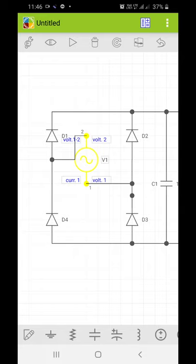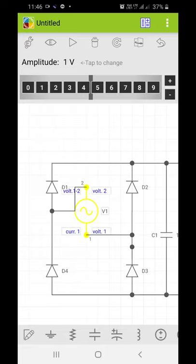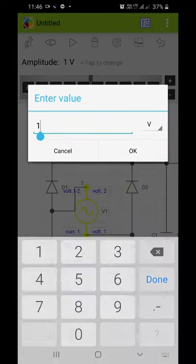Now it's time to choose the values of parameters. Click on the voltage source, take the amplitude as 10 volt.